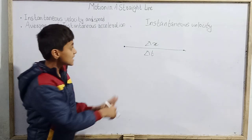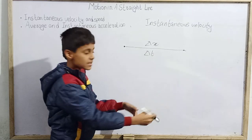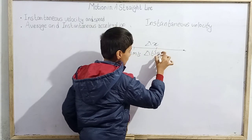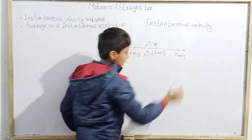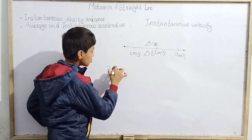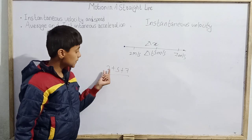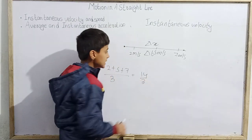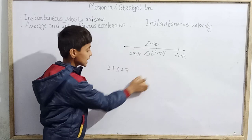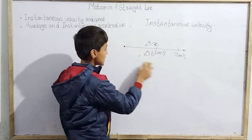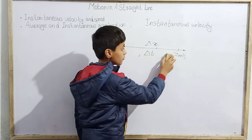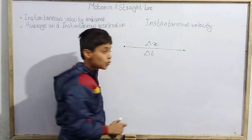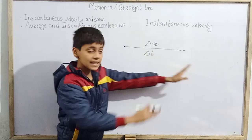Average velocity means at different instants there are different velocities, and in average math we take the sum of all velocities divided by how many there are. For example, 2 meters per second, 5 meters per second, 7 meters per second — average is 2 plus 5 plus 7 divided by 3, which is 14 divided by 3. This average is for the whole journey. We can't tell the average velocity until the journey is complete.